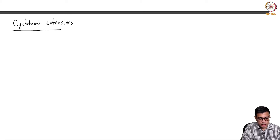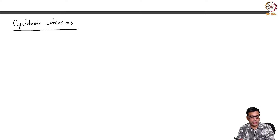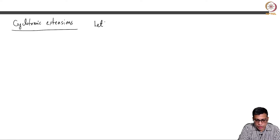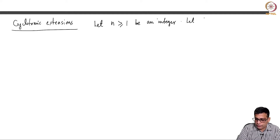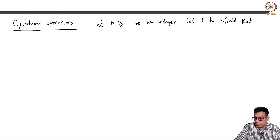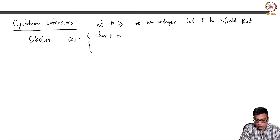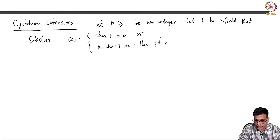Cyclotomic extensions. In this part we are going to formally define what primitive roots — or nth roots of unity — are, and also prove some facts about them. As before, we are going to fix a positive integer n and assume that F is a field satisfying our standing assumption: the characteristic of F is 0, or if the characteristic of F is positive then p does not divide n.